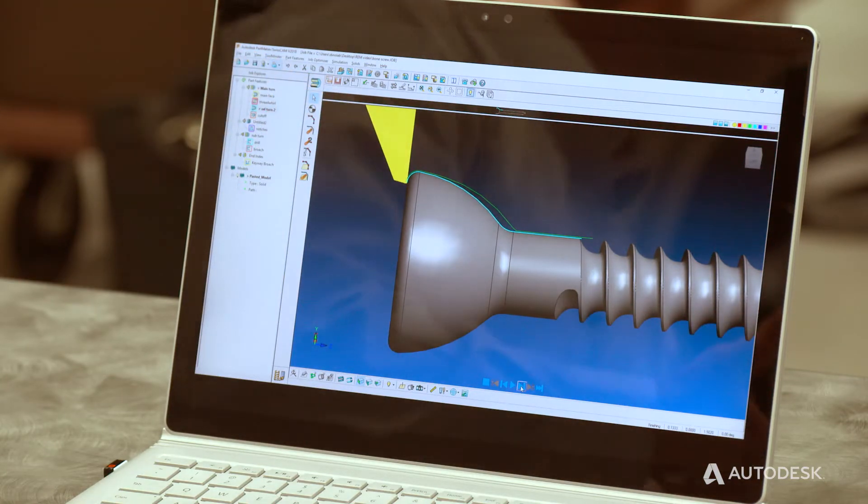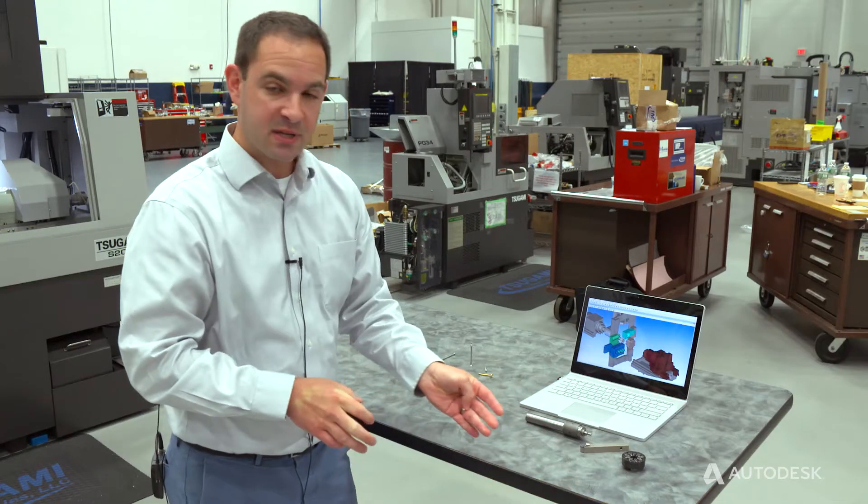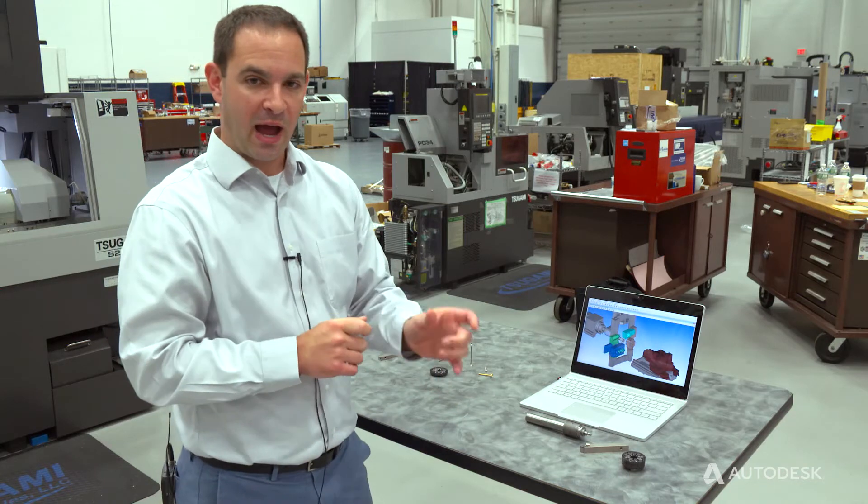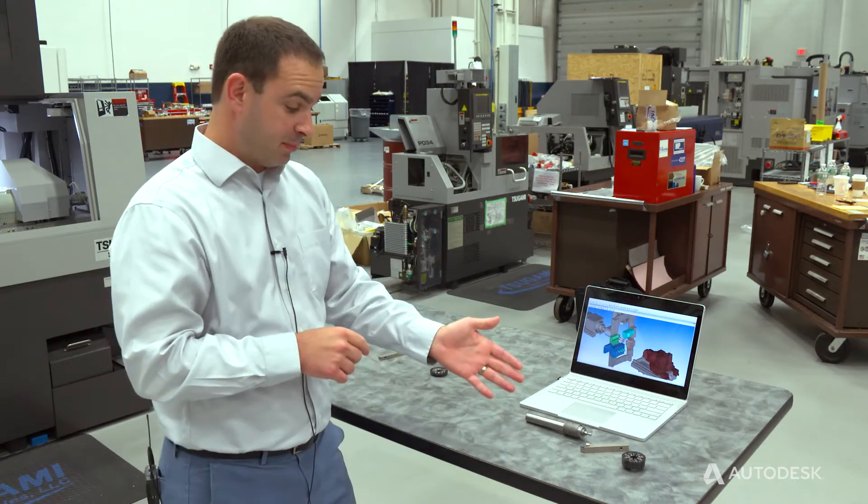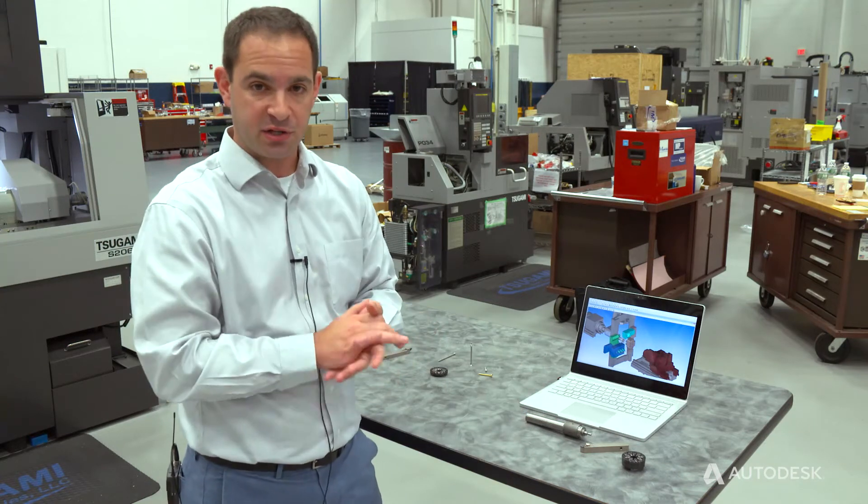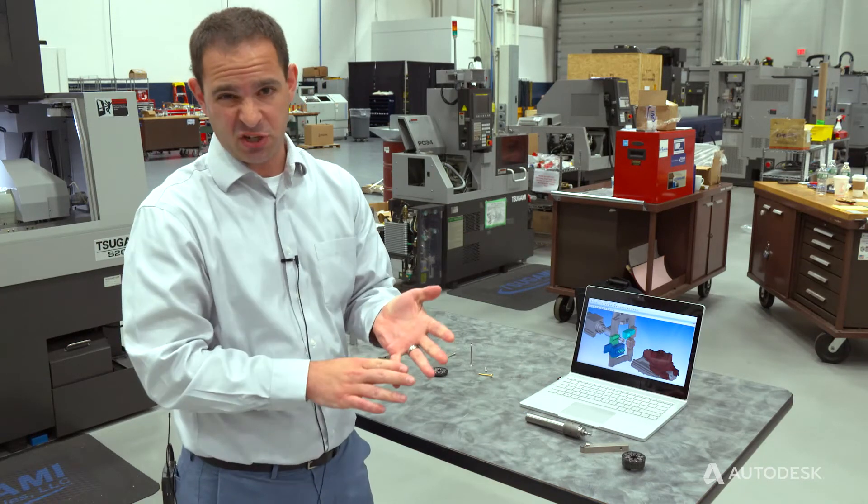So if you're in the business of making high quality small precision parts today, you can see the importance of things like back turning on a Swiss machine and getting the precision and the finish quality that you need in those parts.